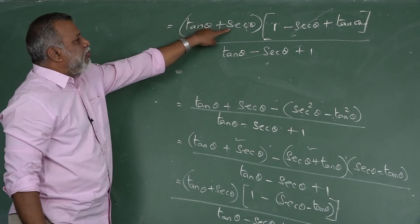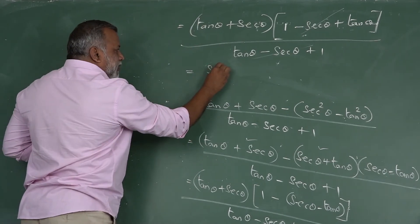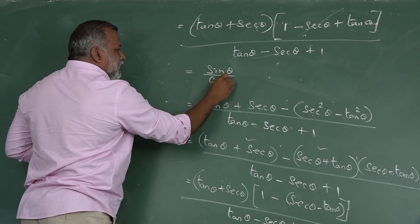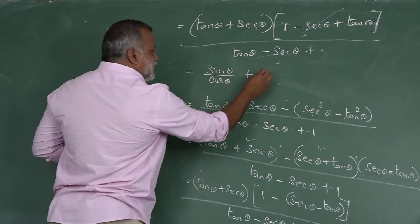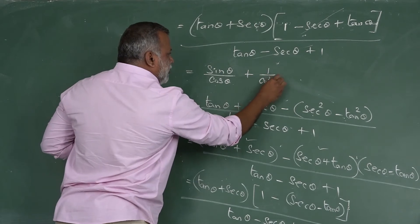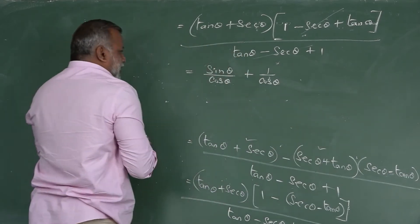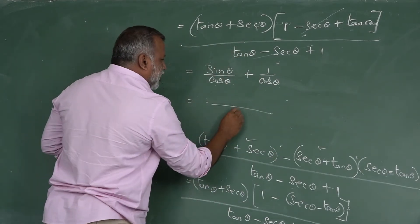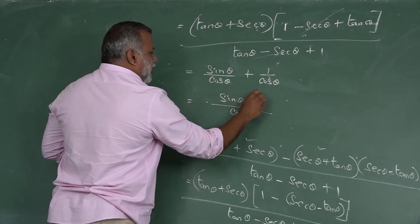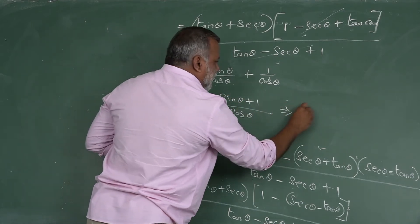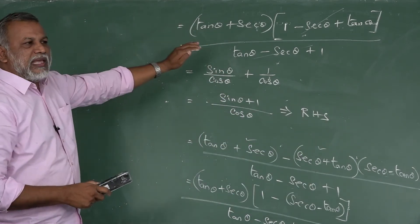After cancellation, the remaining expression is tan θ + sec θ. This tan θ can be written as sin/cos and sec θ as 1/cos. Taking cos as the common denominator, we get (sin θ + 1)/cos θ, which is your RHS. Proof complete.